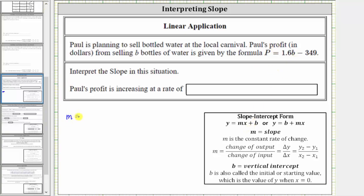The slope is equal to the change in P, or the change in profit, divided by the change in b, which is the change in the number of bottles sold. Looking at our equation, we know the slope is equal to 1.6.